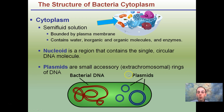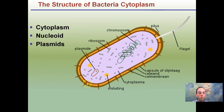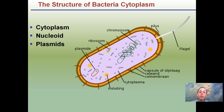Plasmids are small accessory, extra-chromosomal rings of DNA — true circles, typically smaller than the total bacterial genome. The DNA in prokaryotes is located in the nucleoid region, kind of folded on itself, but it is still a circle.